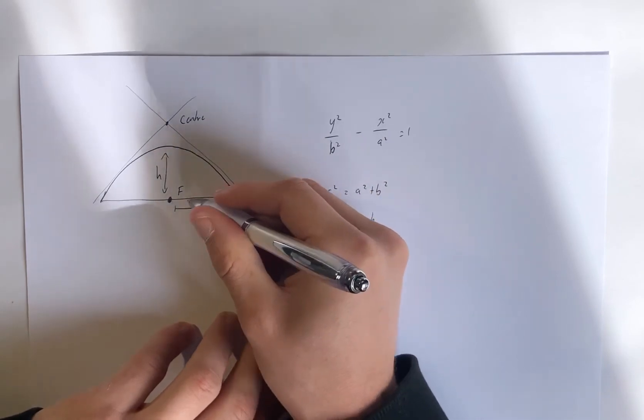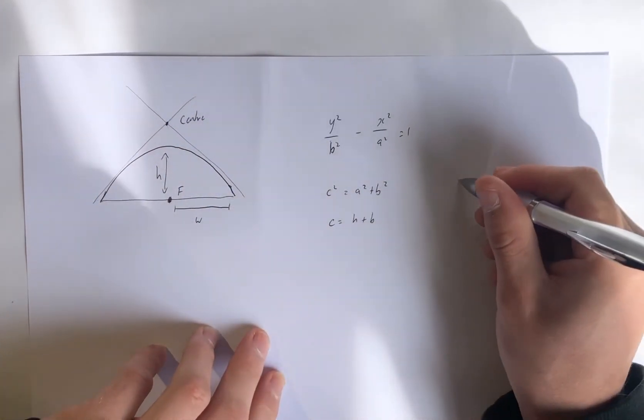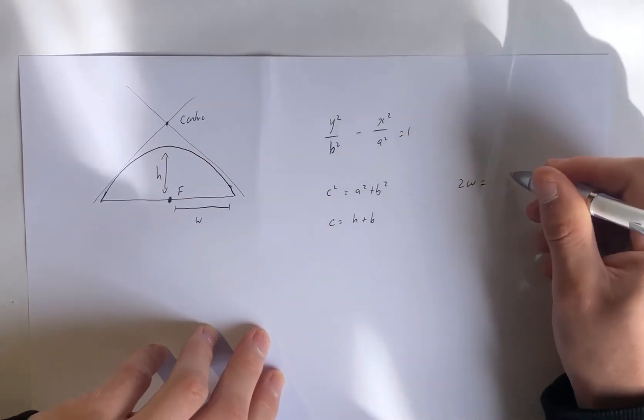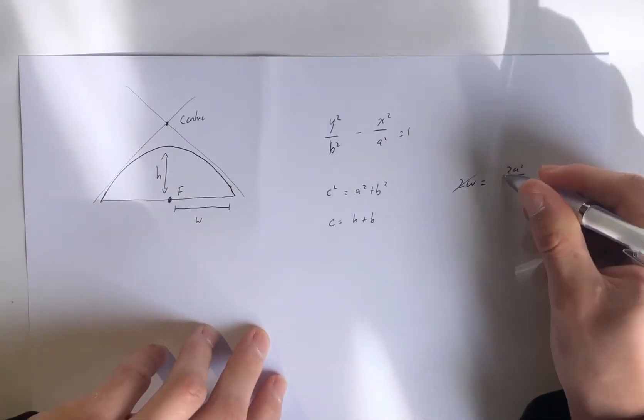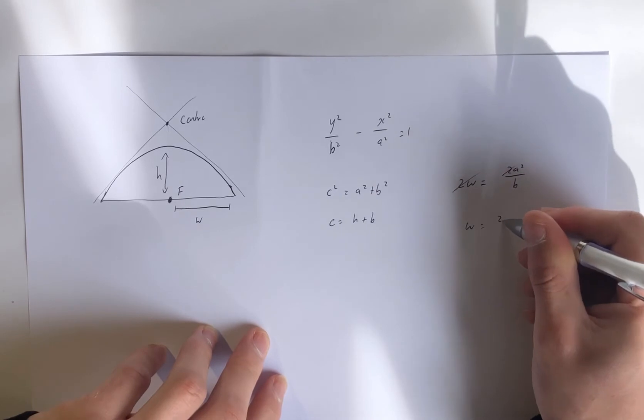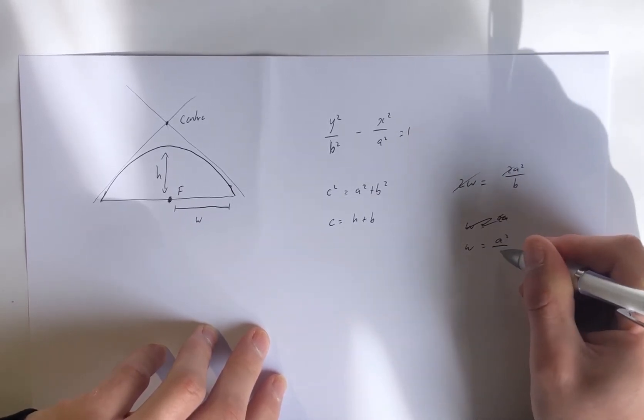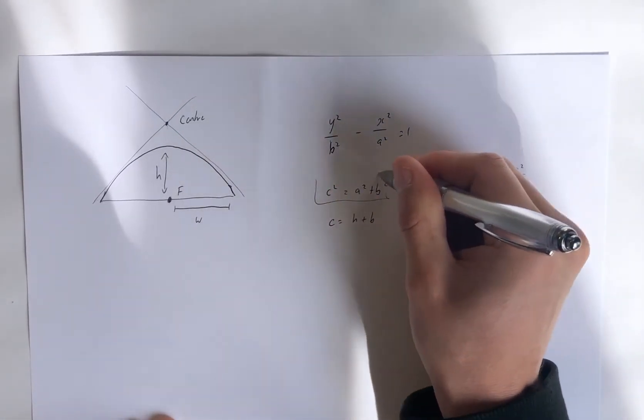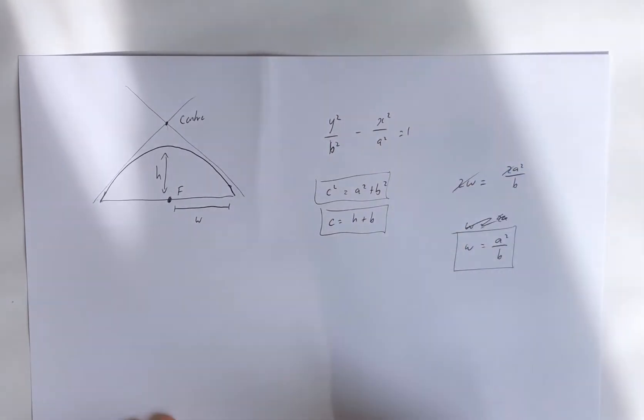Notice I can cancel two there and there. So w is a squared over b. So w times b is a squared. So we've got three pieces of information here. So we can only solve for positive numbers in this hyperbola.